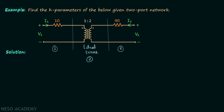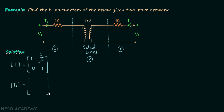Let us find the T parameters of the first network. The T parameters matrix T1 = [1, Z; 0, 1] with Z = 1 ohm, giving T1 = [1, 1; 0, 1]. For the ideal transformer with turns ratio 1 to 2 (N = 2), the T parameters matrix T2 = [1/2, 0; 0, 2].